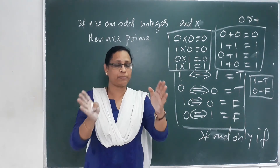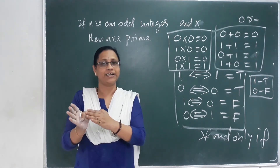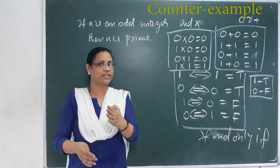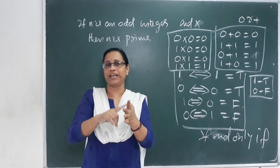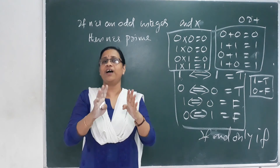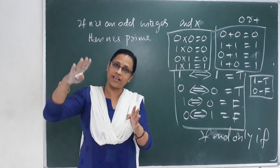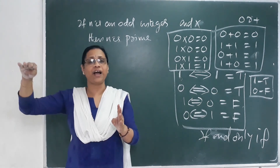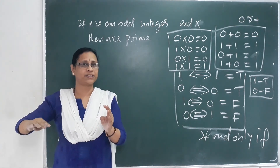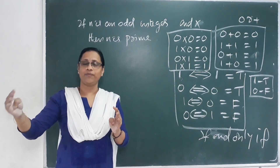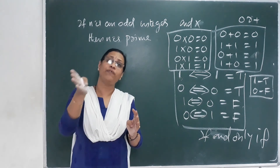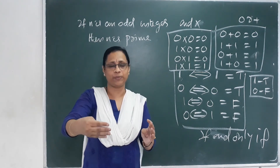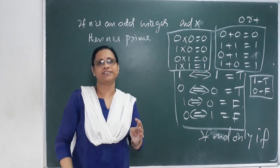Contra-positive and converse. The last point is counter-example — we call it counter-example. We call it for: or, and, if-then, if and only if. We call it valid — check it. Invalid means downstatement. We call it counter-example.